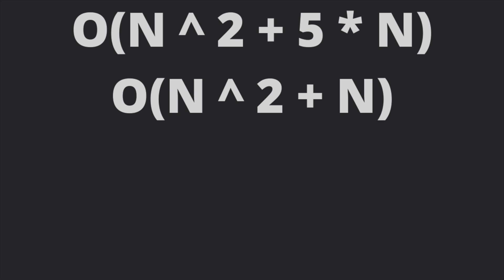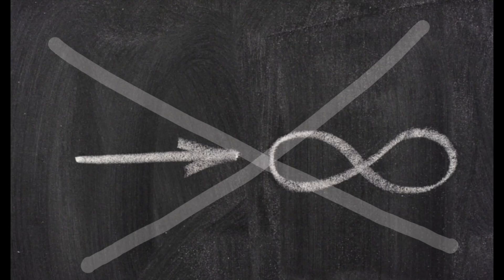But since n tends to infinity, 5 is a constant, it becomes big O of n square plus n. But since n is a non-factor in front of n times n, the time complexity ultimately becomes big O of n square, which is the major factor, which will overshadow everything else when n tends to infinity.